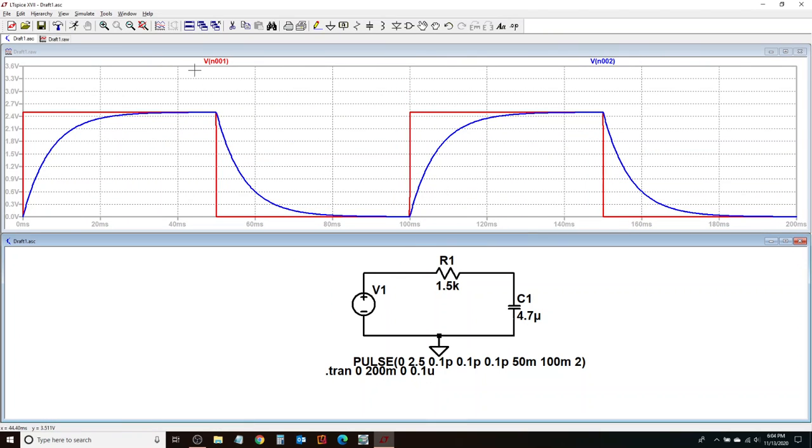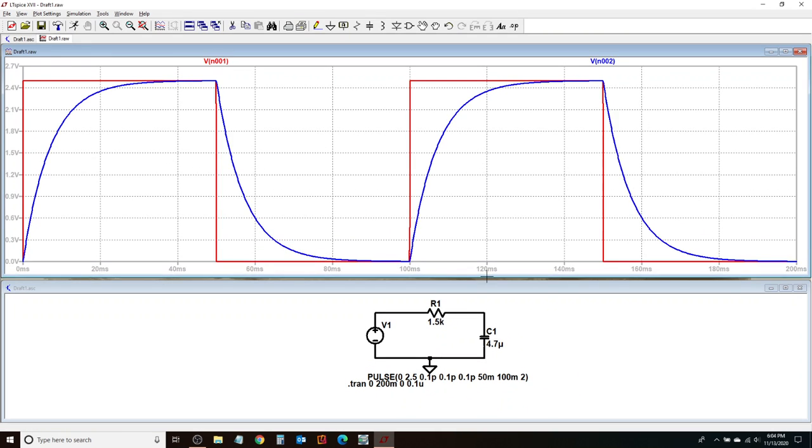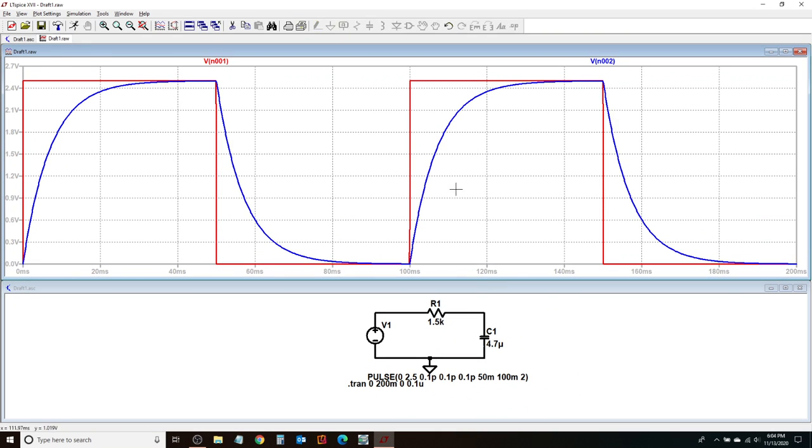And I'm back to the voltage source at the input and the output. Now I can zoom to fit so that I can see it properly. And I'm going to lower this down so that we can focus on what information can be obtained from the input and output traces.